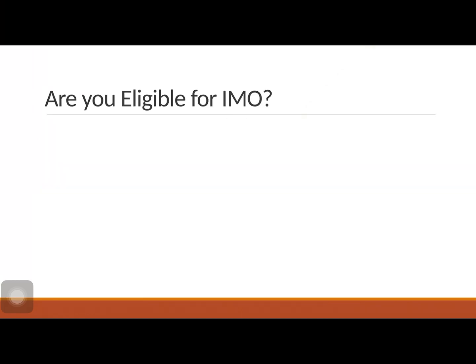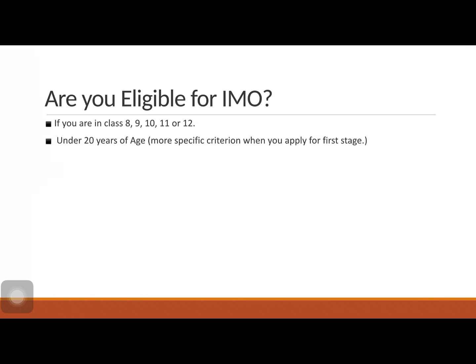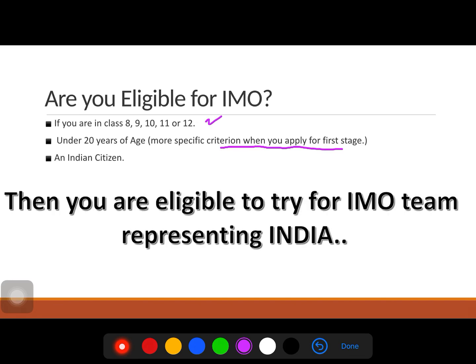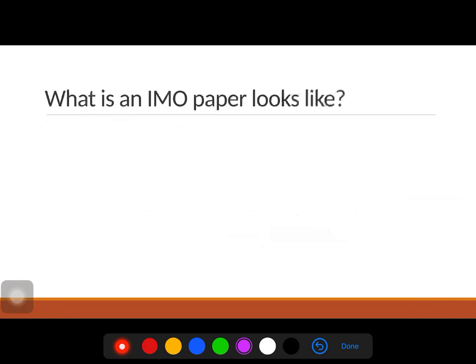If you are an Indian student, the eligibility criteria for IMO are: you should be in class 8, 9, 10, 11, or 12; you should be under 20 years of age when participating at IMO; and you should be an Indian citizen. If these three conditions are met, you are eligible to try for the team representing India at IMO.